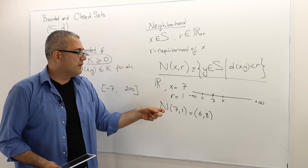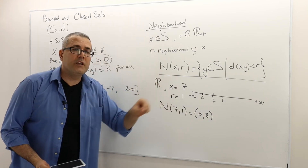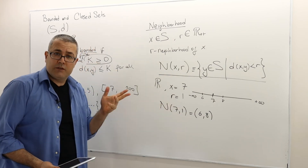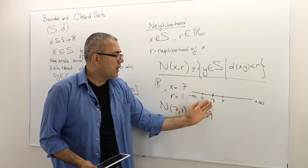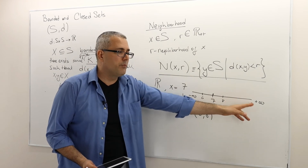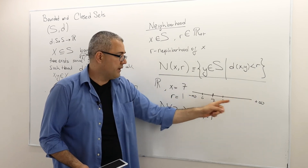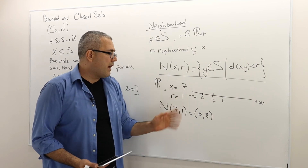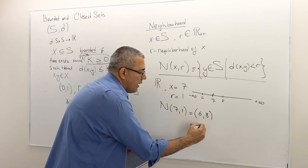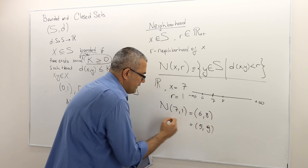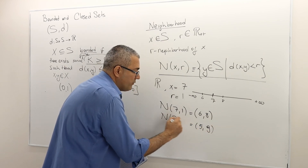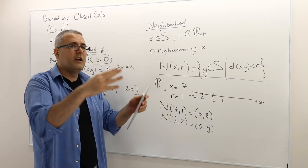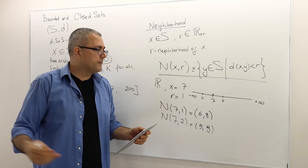If you increase r to 2, then the two-unit neighborhood of 7 becomes the open interval (5, 9). As you increase r, the neighborhood enlarges.